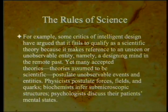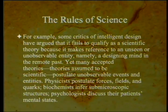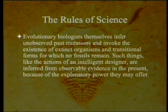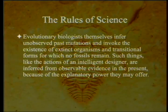For example, some critics argue that intelligent design fails to qualify as scientific because it makes reference to an unseen and unobservable entity — namely a designing mind in the remote past. Yet many accepted theories postulate unobservable events and entities. Physicists postulate forces, fields, and quarks. Biochemists infer sub-microscopic structures. Psychologists discuss their patients' mental states. Geologists discuss meteorites that hit the earth 65 million years ago — they never saw them. Evolutionary biologists themselves infer unobserved past mutations and invoke extinct organisms and transitional forms for which no fossils remain. Such things, like the actions of an intelligent designer, are inferred from observable evidence in the present because of the explanatory power they may offer.